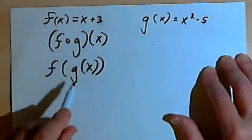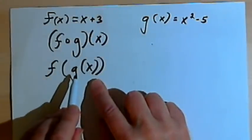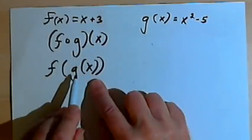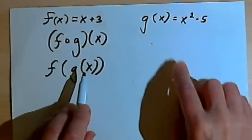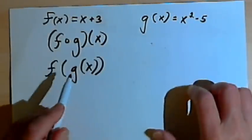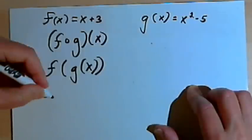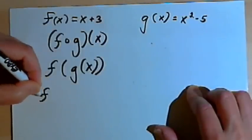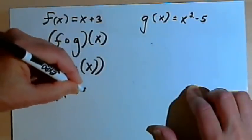And all we're going to do is work our way through this by starting in the innermost parentheses. We're going to find what g of x is. So we're told what g of x is: g of x is x squared minus 5. So I'm going to take this g of x and replace it with x squared minus 5. That means I'm going to have f of x squared minus 5.